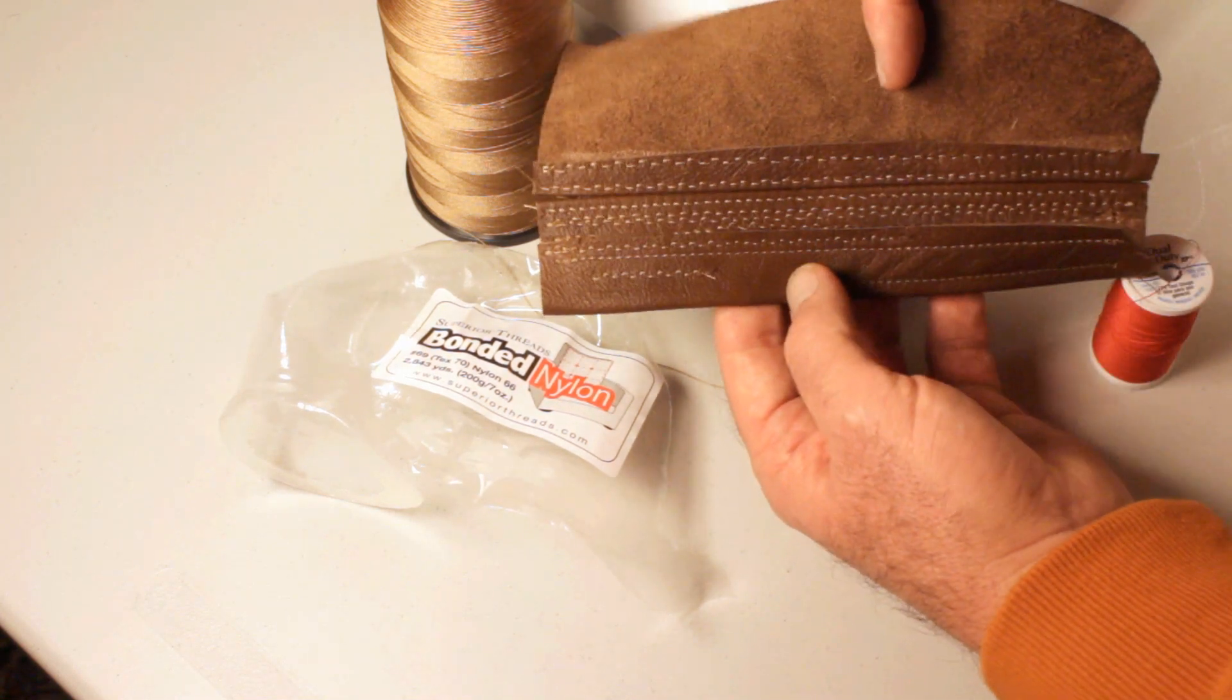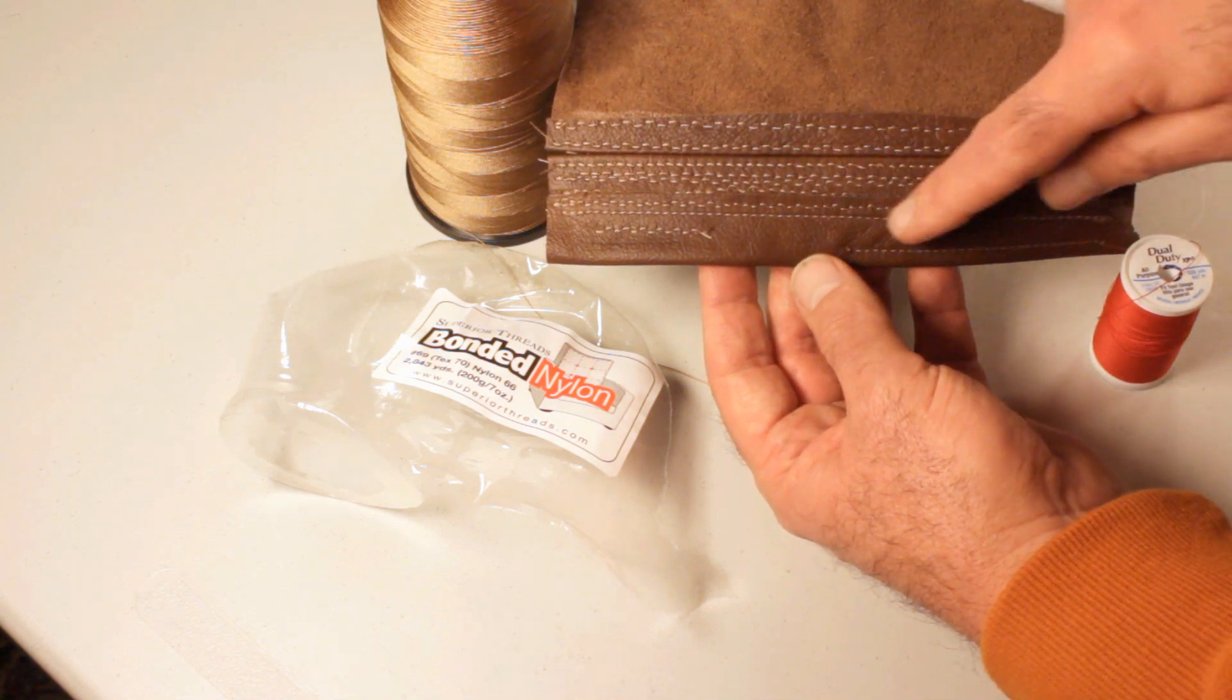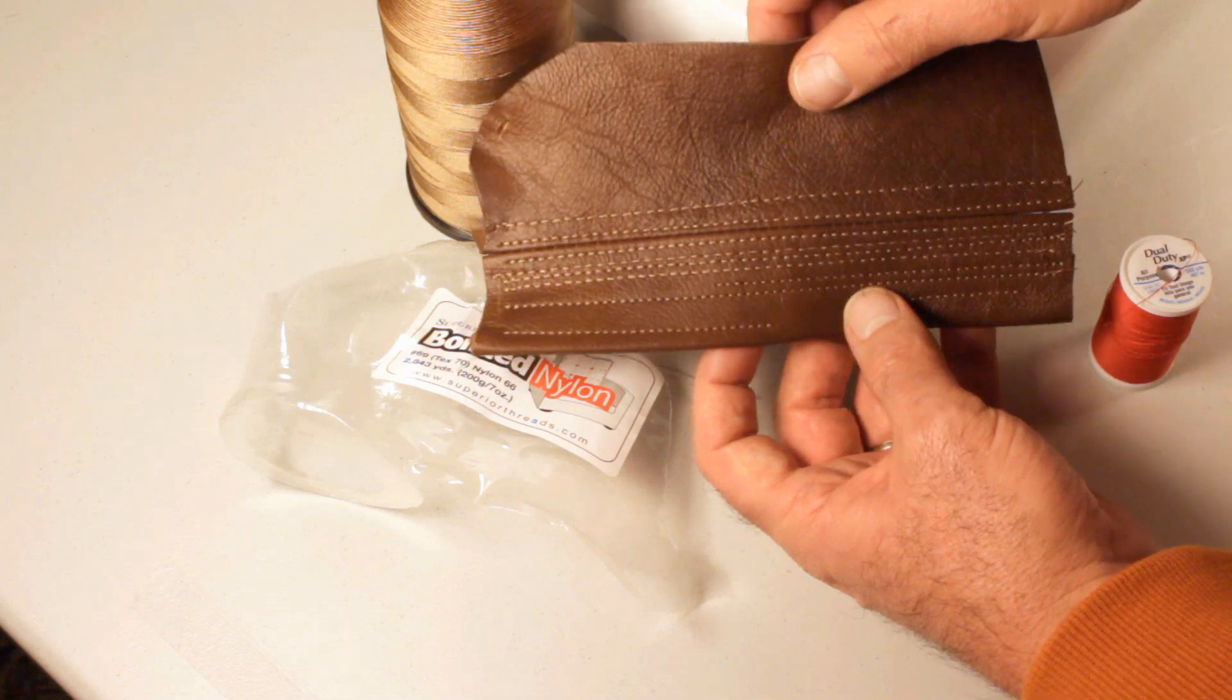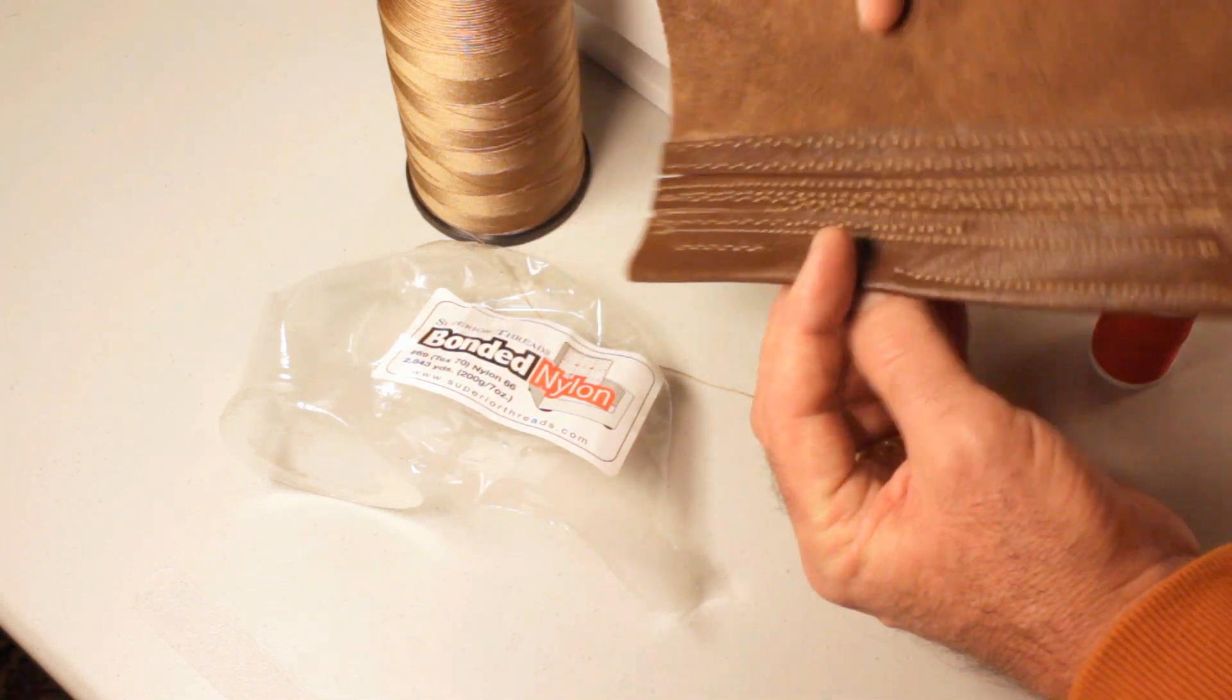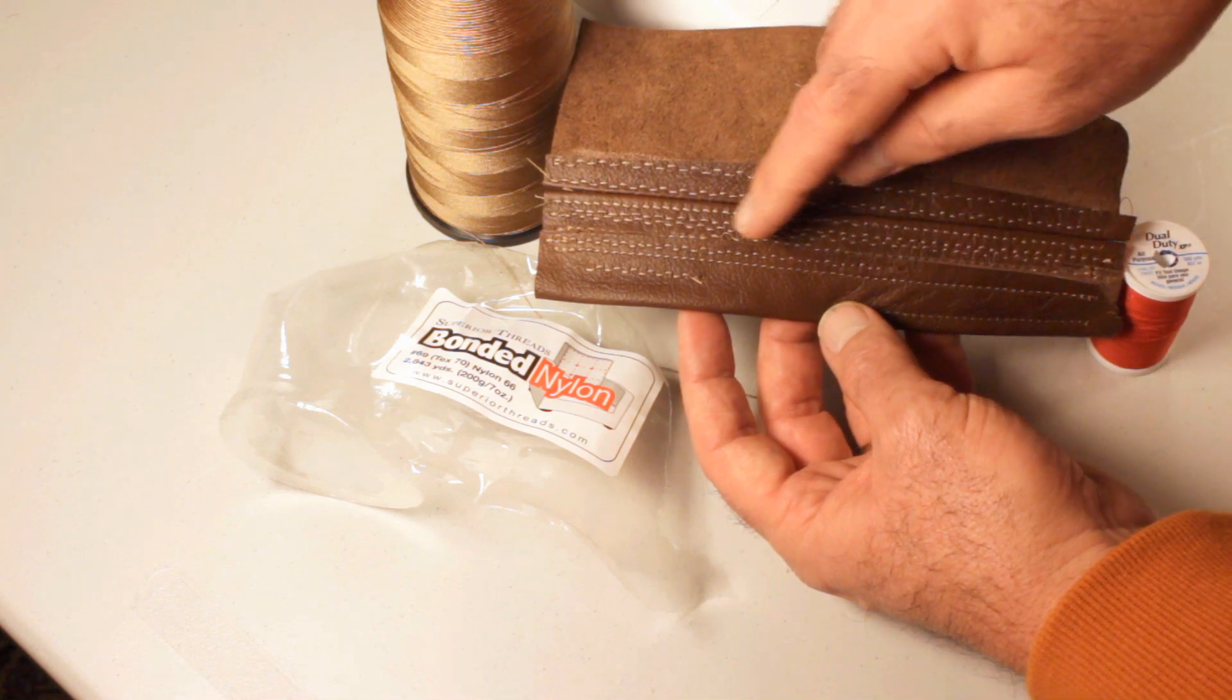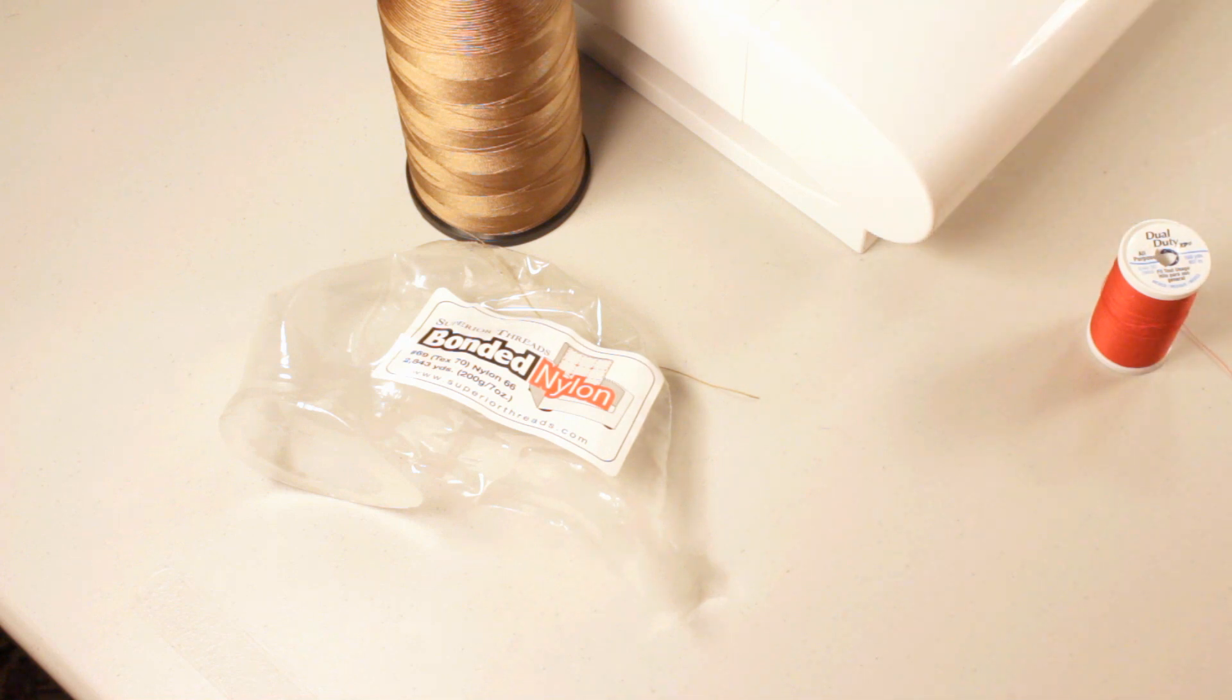The point is, you've got to get a good successful bottom stitch tension-wise first. And then you can go to adjusting the top tension to get the proper stitch that you need. I'll show you what it does when you get this style stitched, and then I'll show you how to correct it to get this style on the back side. Let's move forward. We'll do the Dual Duty Coats and Clark XP first, and then we'll do the nylon second.